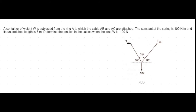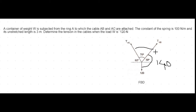Now we identify the angles to use in Lami's theorem. For TAC, the opposite angle between the other two forces is 50 plus 90, which equals 140 degrees. For the 120 Newton weight, the angle will be 70 degrees. For TAB, the angle is 60 plus 90, which equals 150 degrees. We now have all the angles needed to apply Lami's theorem.